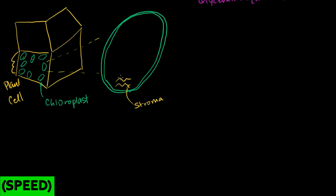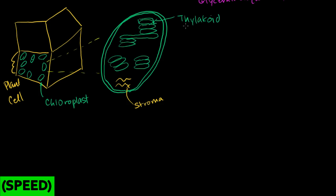Within the chloroplast itself, you have these little stacks of folded membranes — you can almost view them as pancakes. Each of these flat pancake-like structures is called a thylakoid. The thylakoid has a membrane, which is especially important. The fluid inside of the thylakoid — that space — is called the thylakoid space, or the thylakoid lumen. A stack of several thylakoids is called a grana.